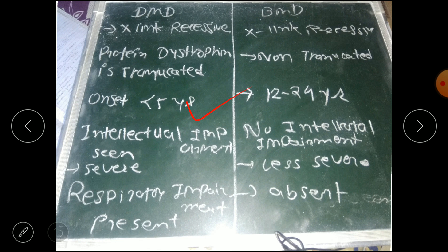is onset. Basically, DMD is a disease seen in children and BMD is mostly seen in adulthood to adolescence. The ages: DMD, that is Duchenne muscular dystrophy, has onset less than 5 years, and Becker's is 12 to 24 years onset. In Duchenne muscular dystrophy, intellectual impairment